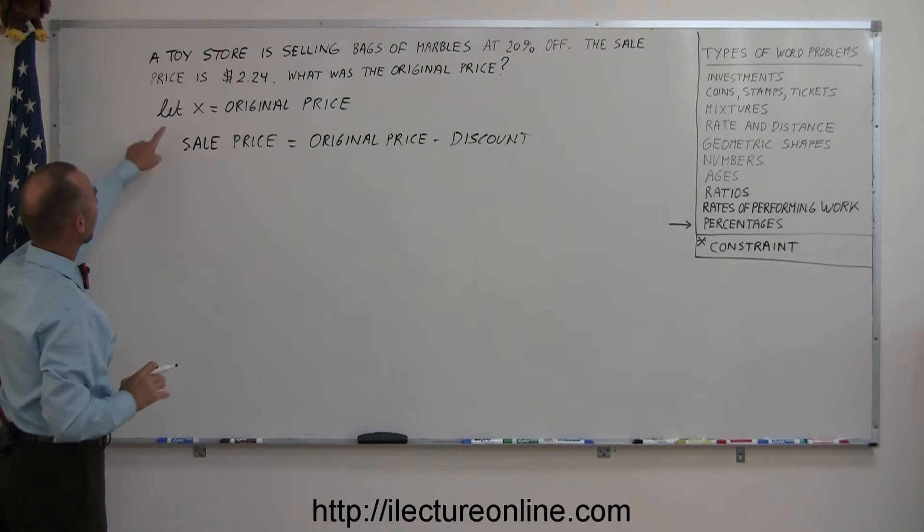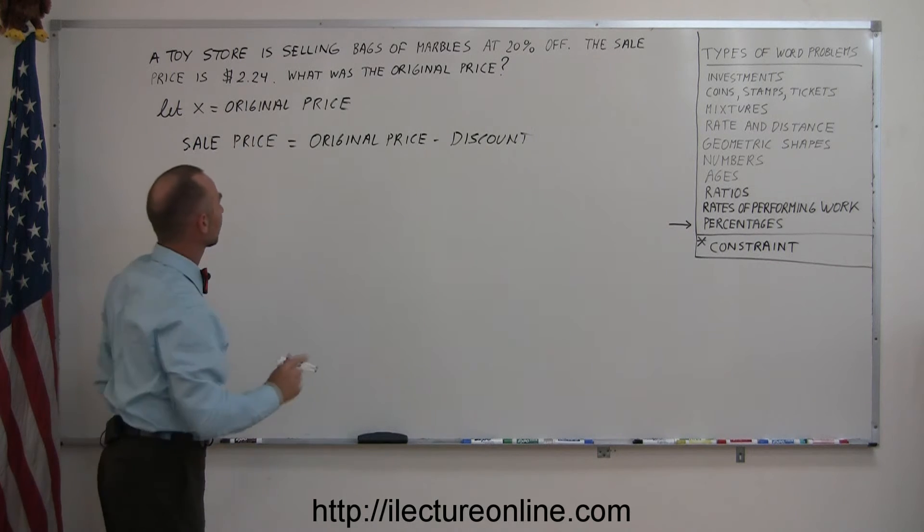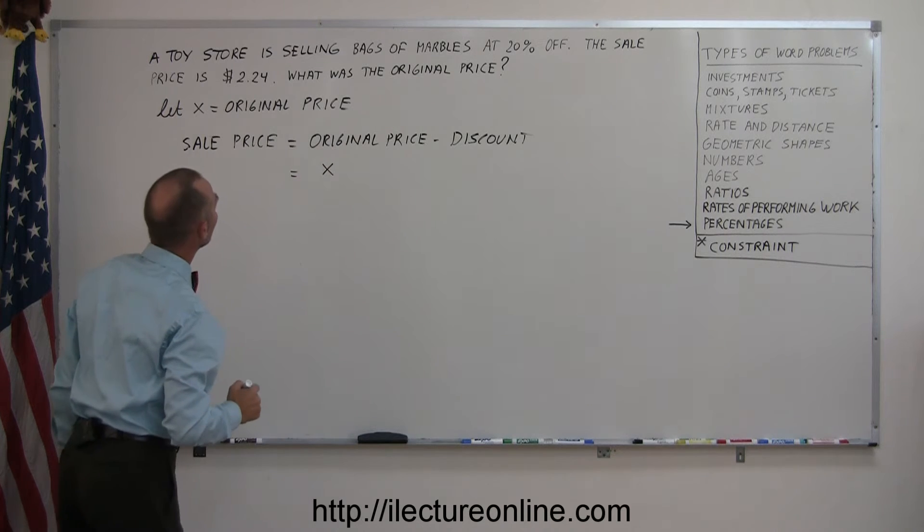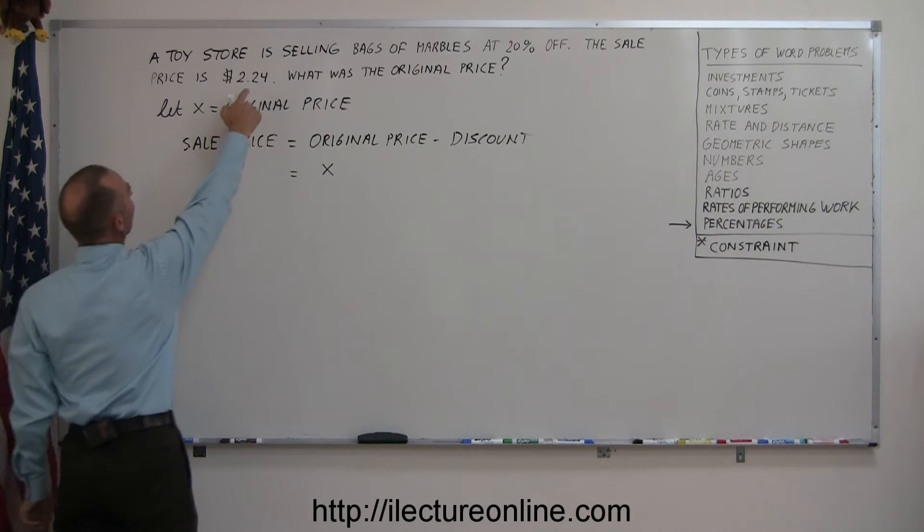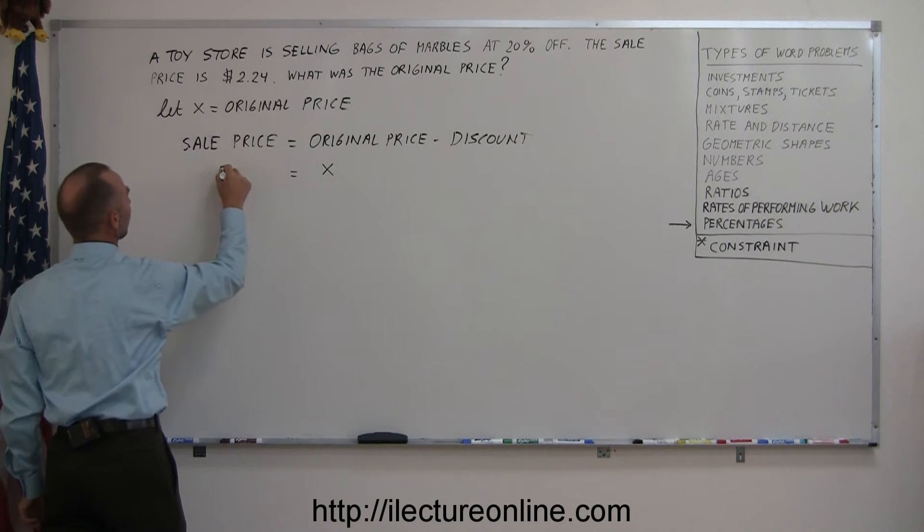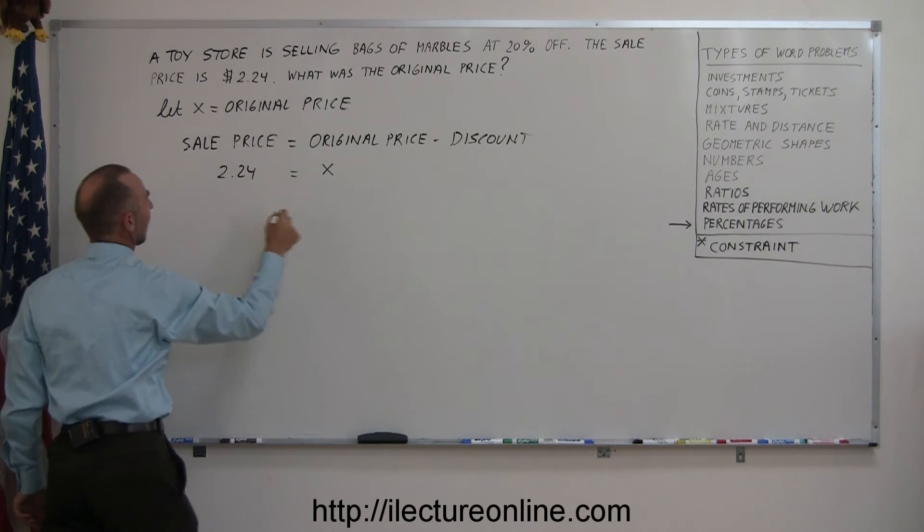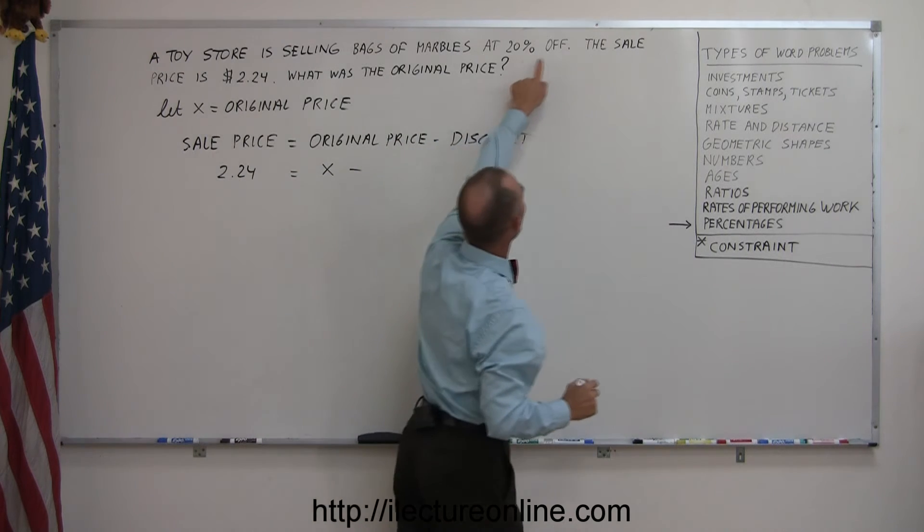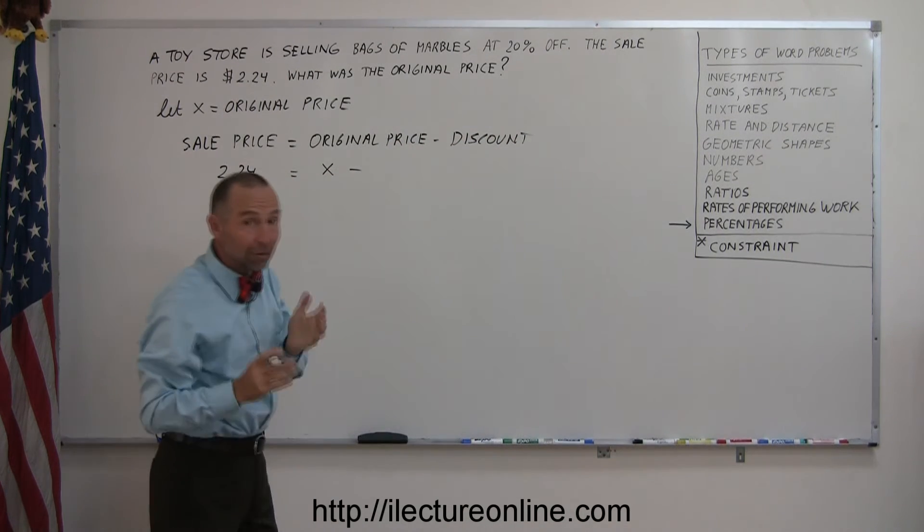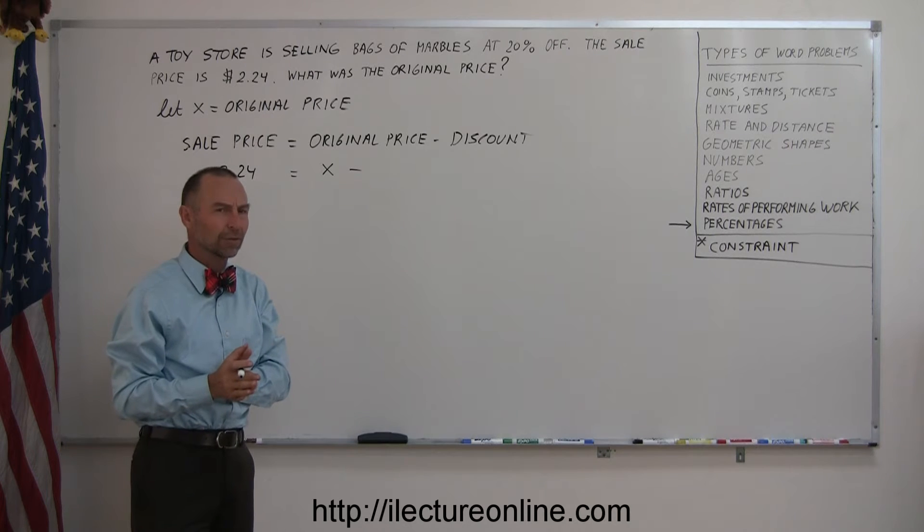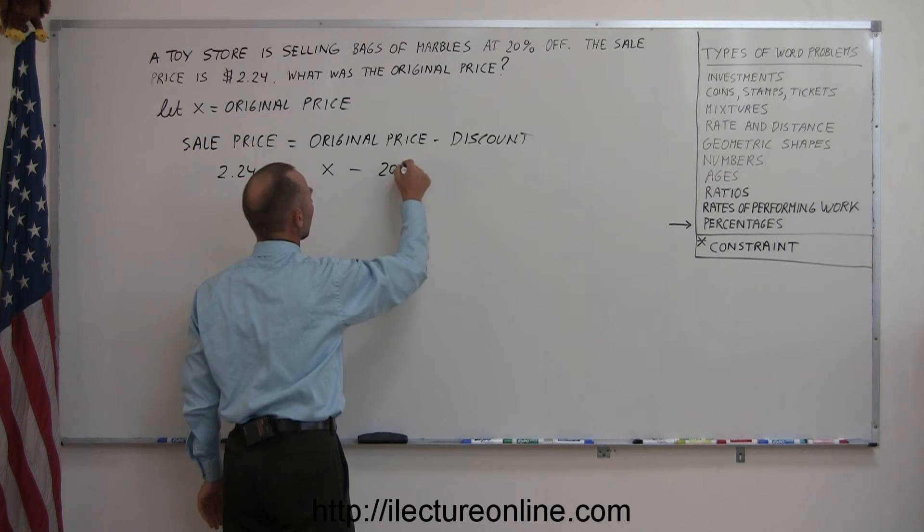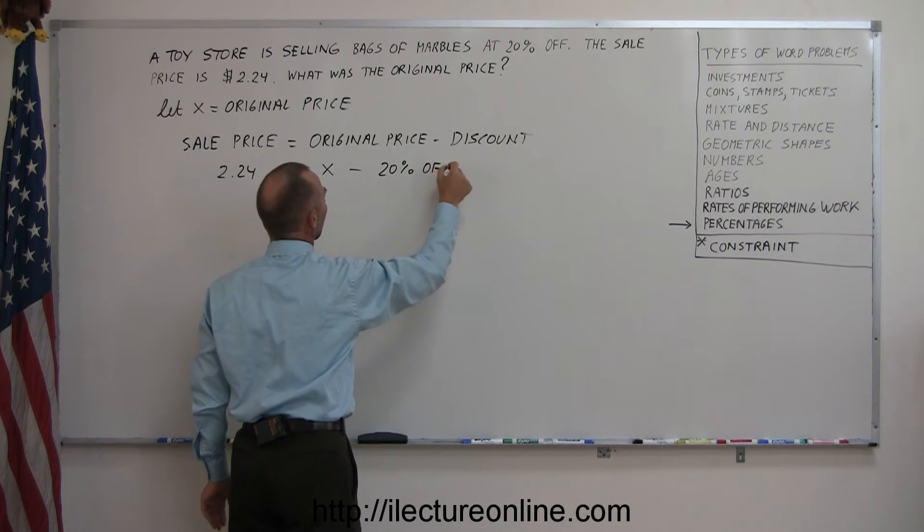So the original price will let that equal X. The sale price, well that's, they tell us what that is, it's $2.24. And the discount, well let's see, they tell us that it's 20% off, and I guess we assume that's 20% off from the original price. So minus 20% of the original price.